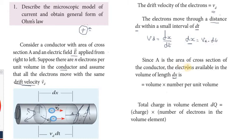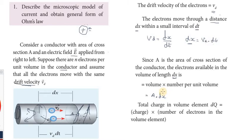Since A is the area of cross-section of the conductor, the electrons available in the volume of length dx: the volume element equals A into dx. The number of electrons in this volume element equals n into A into dx, which is n into A into vd into dt.